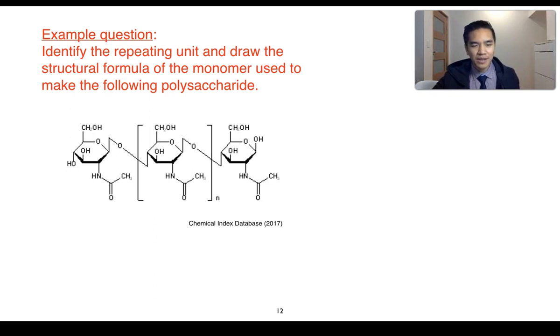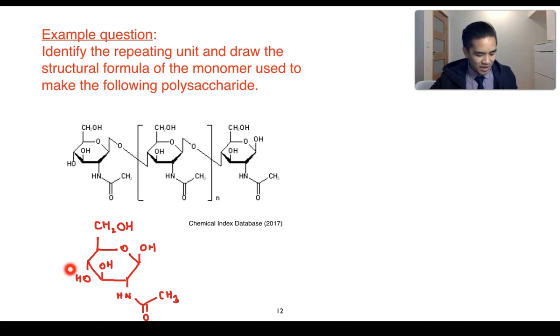We've now got this example question. Identify the repeating unit and draw the structural formula of the monomer used to make the following polysaccharide. You can see that there is already a repeating unit indicated, so let's just look at the monomer that's being used to make up this polysaccharide. So there we have the structure of the monomer that's used to make the following polysaccharide. Just note that at this particular site here and here, this is where those monomer units were joined together to form the polymer. And so we would have to look at the addition of water to reform our hydroxyl groups at each of those sites there. Everything else essentially stays the same.